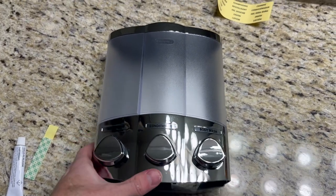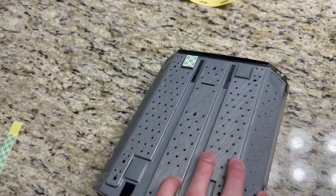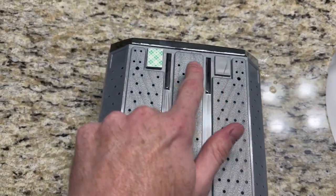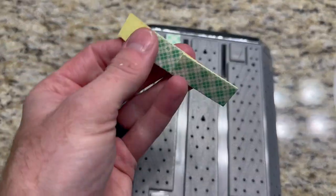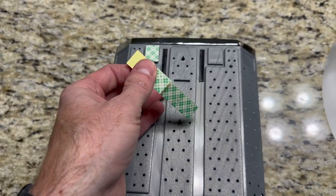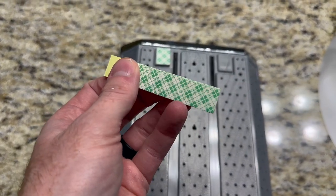First, we're going to flip this over and you'll notice that there are four sections here, one for each of the four adhesive pads. So we're going to put those in the designated locations.